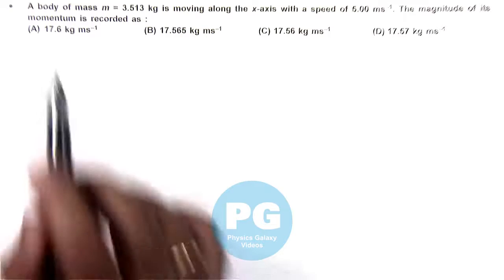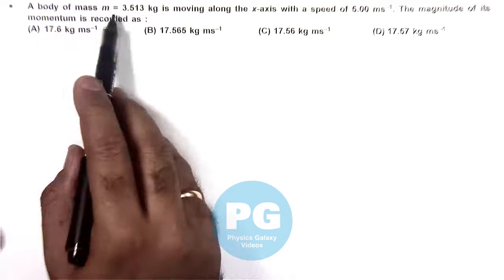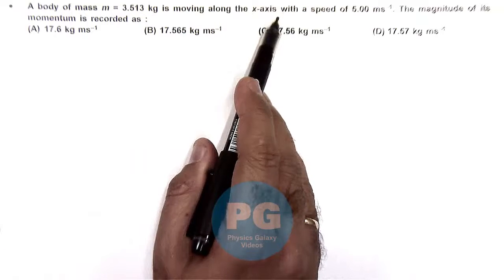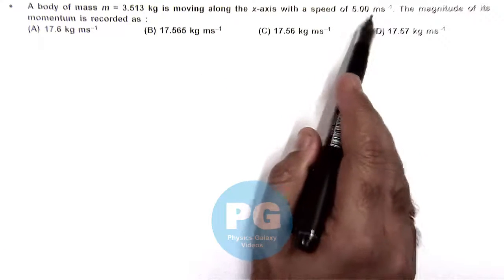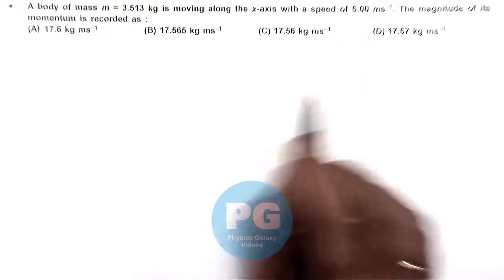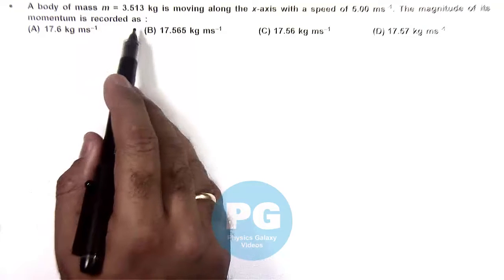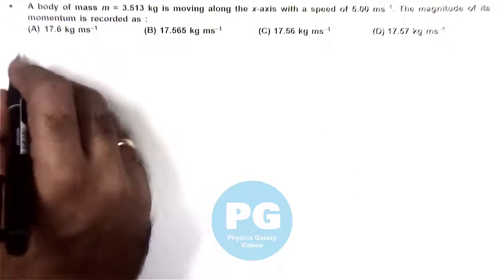In this question, it is given that a body of mass m equals 3.513 kg is moving along the x-axis with a speed of 5.00 meters per second. And it is asking the magnitude of its momentum is recorded as. We need to calculate the momentum.